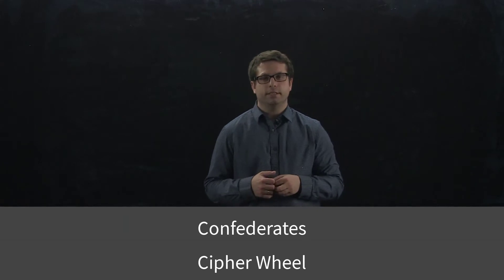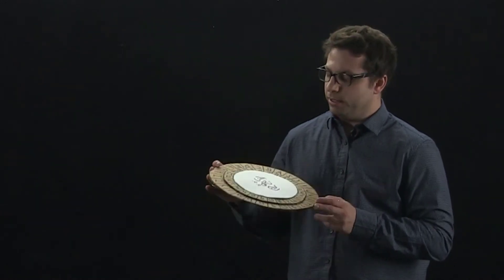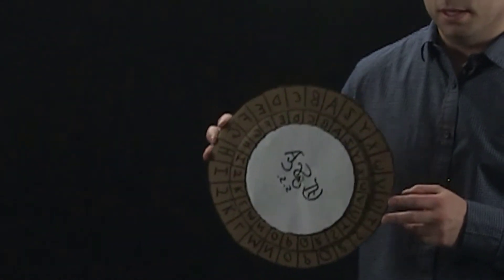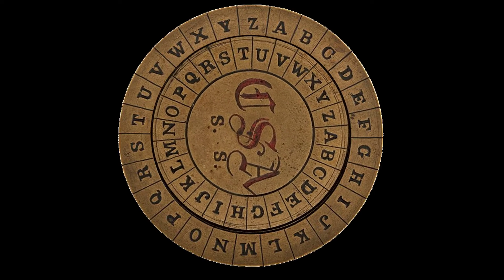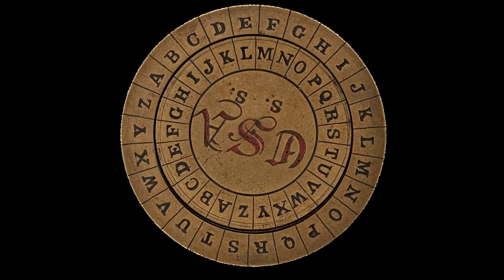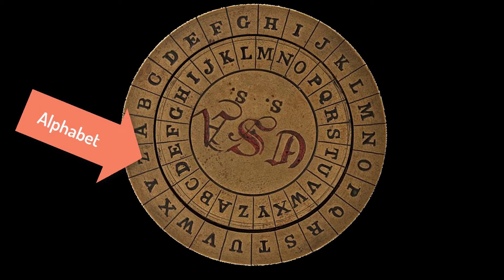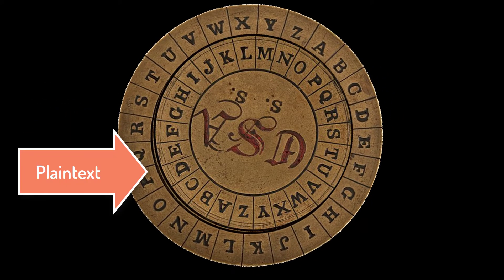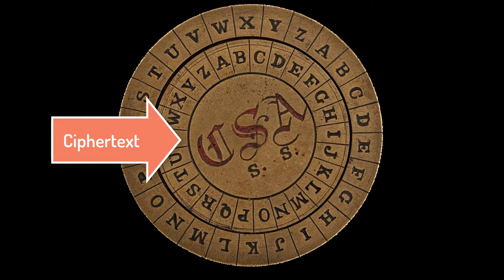Let's start with the Confederate cipher wheel. The Confederacy cipher wheel is pretty simple to make — I just made mine out of two circles of cardboard. It's made up of two wheels: a small one and a larger one, where the small one is laid on top of the large one. The letters of the alphabet are written around the edges of both wheels. The outside letters refer to the plain text — this is the original message. The inside letters refer to the cipher text — this is the encrypted message.